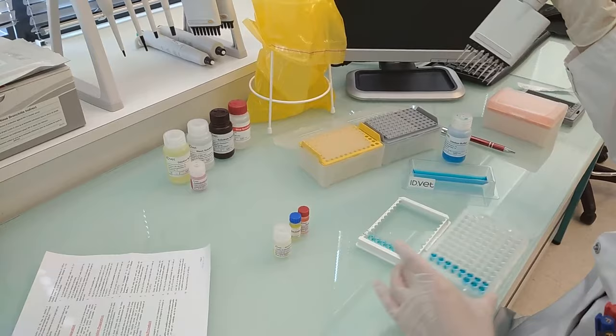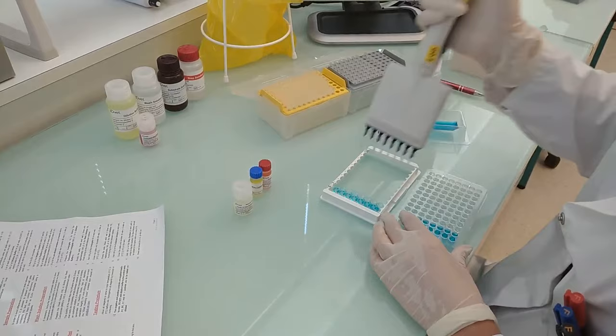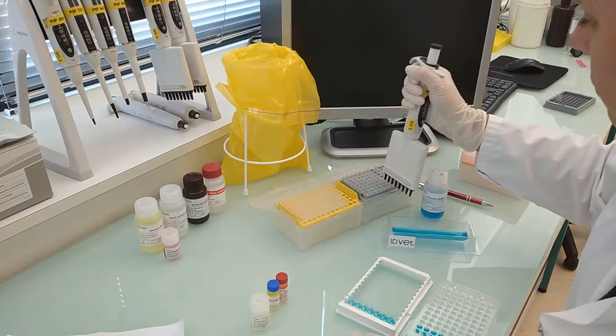Add X microliters of the prediluted samples depending on the final sample dilution. For example, for a 1 to 500 final dilution of samples, add 90 microliters of buffer and 10 microliters of prediluted samples.